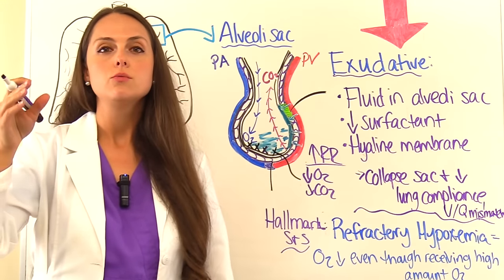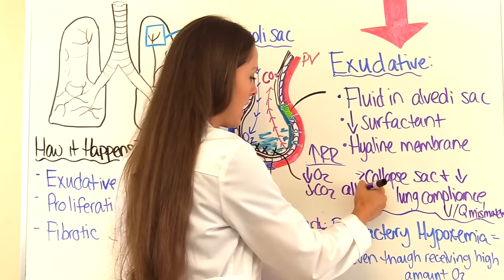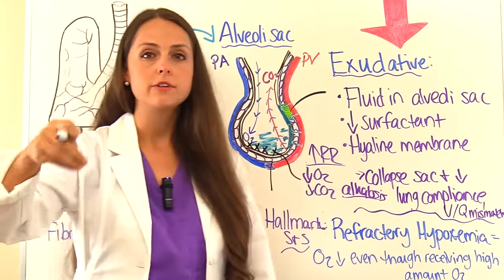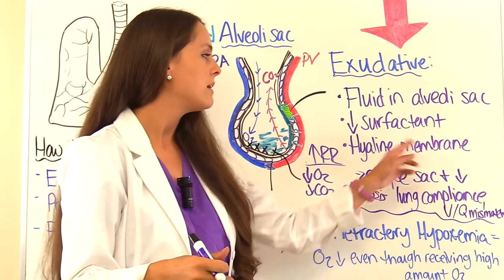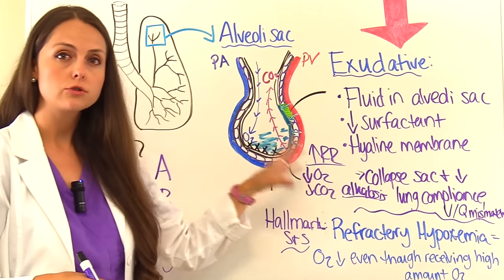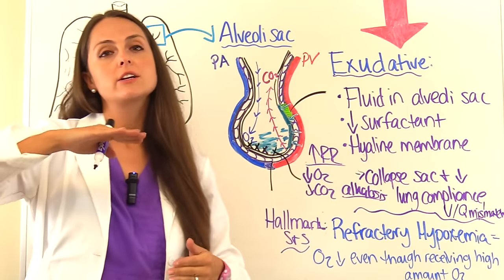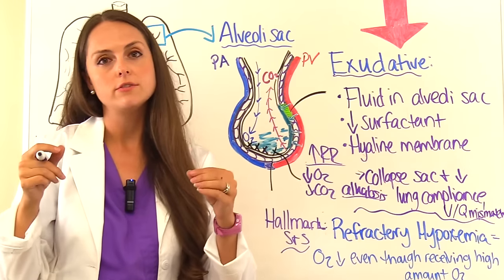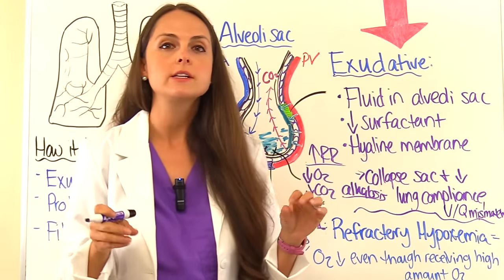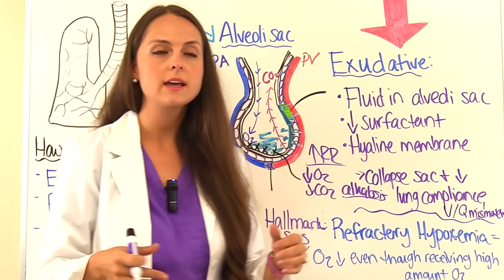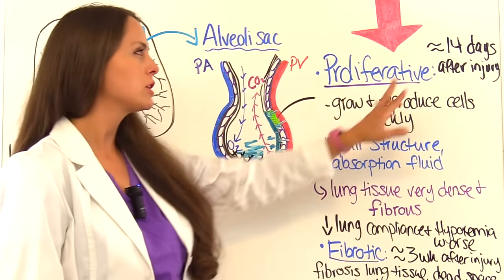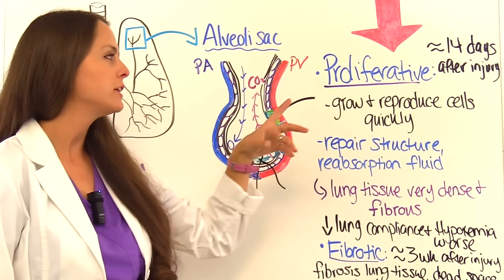As the patient progresses, the hyaline membrane makes it even harder for CO2 to cross over, and the respiratory muscles become fatigued. CO2 levels start to rise, and the patient then enters respiratory acidosis later in the disease course.